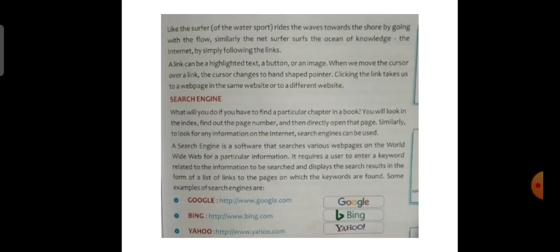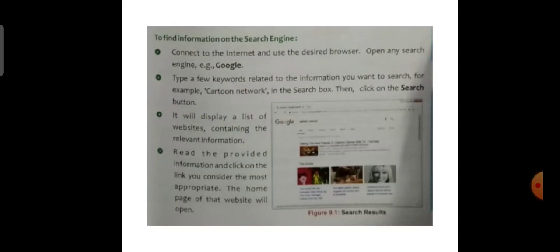To find information on a search engine, connect to the internet and use the desired browser. Open any search engine, for example Google. Type a few keywords related to the information you want to search — for example, Cartoon Network — in the search box, then click on the search button. It will display a list of websites containing the relevant information. Read the provided information and click on the link you consider most appropriate. The homepage of that website will open.